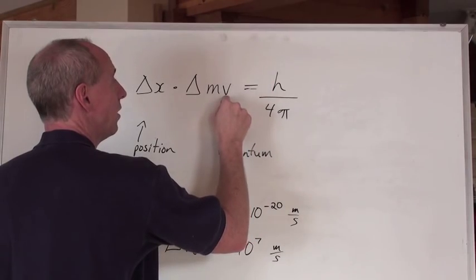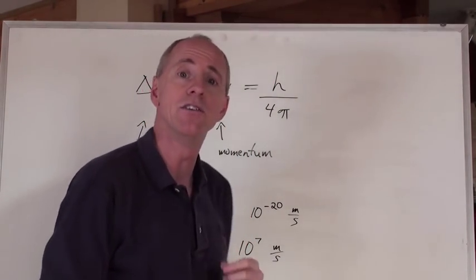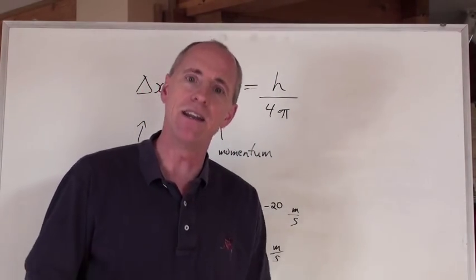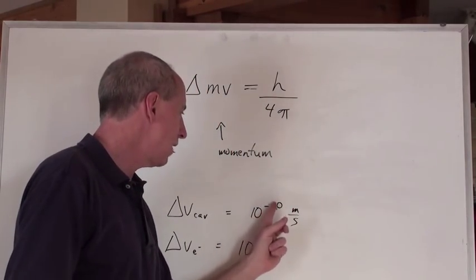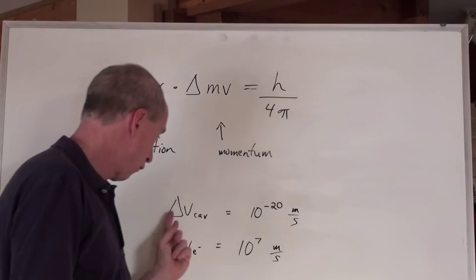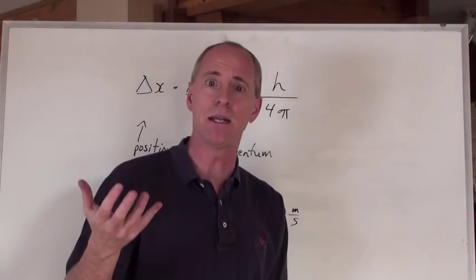You move those over to this side to isolate for the uncertainty in the speed, you actually get a number, pretty much akin to, in the range of, about 10 to the negative 20 meters per second for the uncertainty in the speed of a car. What the heck does that mean?